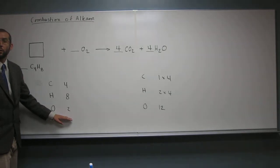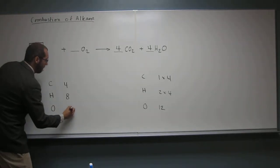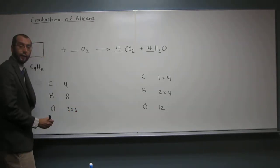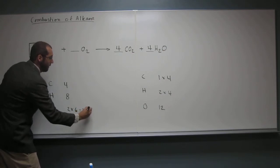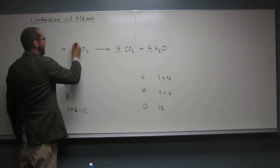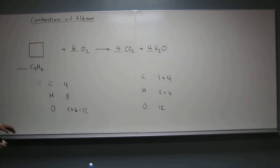Over here, we have 2 oxygens, so what do we got to do? Multiply that by 6. Multiply that by 6, like that. And that's going to give us 12, right? So, we put a 6 there. We don't have to put anything there, right? Because it's understood to be 1.